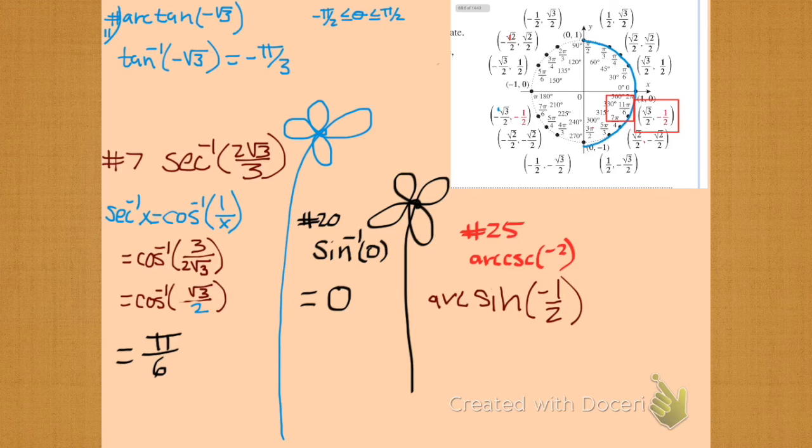So on our y, we find our y is going to be 11 pi over six, which is a minus pi over six. When we use our restrictions, what else?